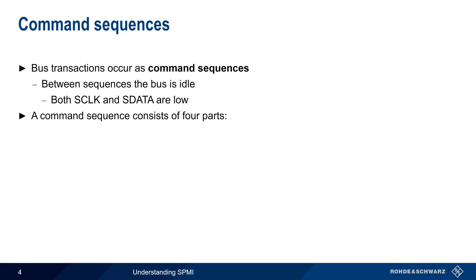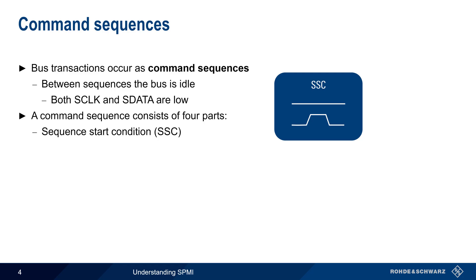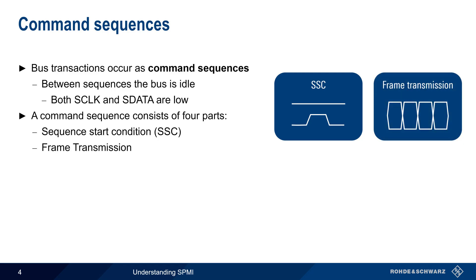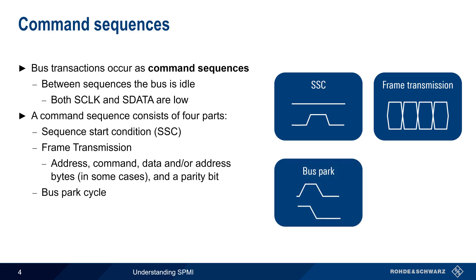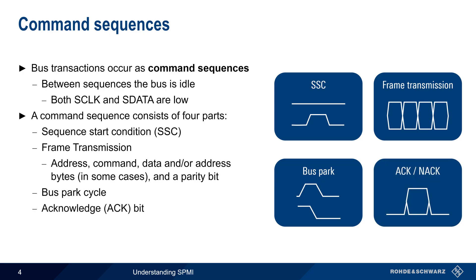A command sequence consists of four parts: a sequence start condition that is used to indicate the start of a sequence, after which various types of frames can be transmitted. A frame is made up of an address, a command, data and/or address bytes in some cases, and a parity bit for error checking. A special bus park cycle is used at various points in this process, and SPMI also includes an acknowledge or ACK bit to confirm proper reception of some types of transmitted frames.